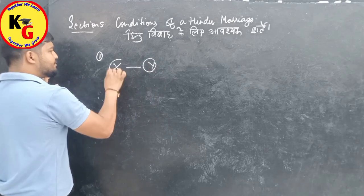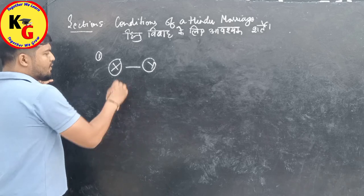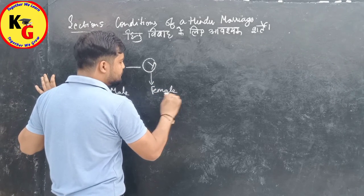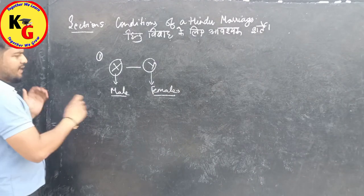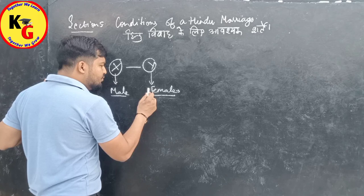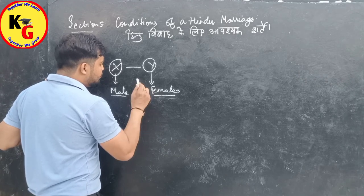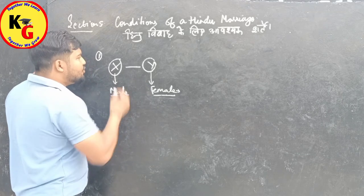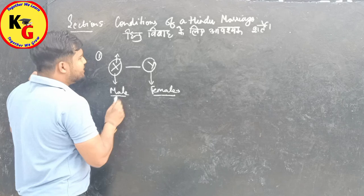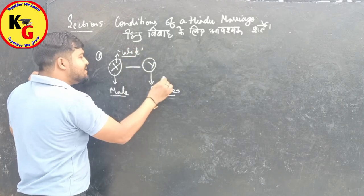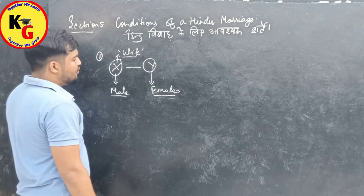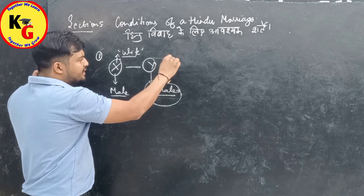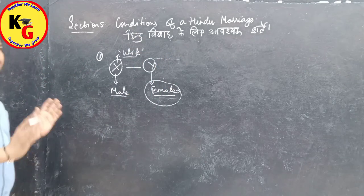For example, consider two parties: X (male) and Y (female). First, both must be Hindu. Second, if marriage is being solemnized between them, X must not have any living wife at the time of marriage, and Y similarly must not have any living husband at the time of marriage. This is the first condition.